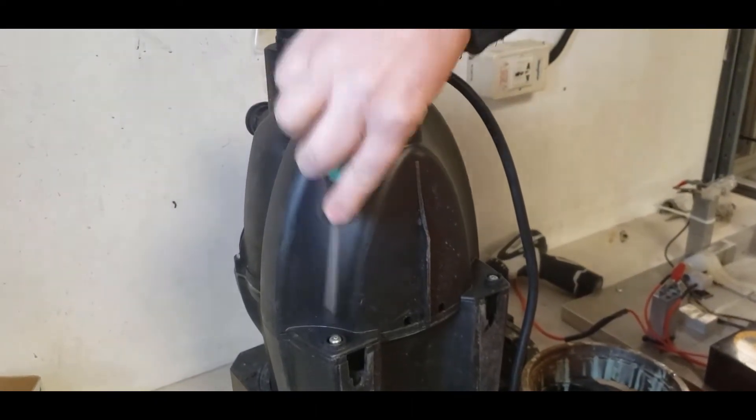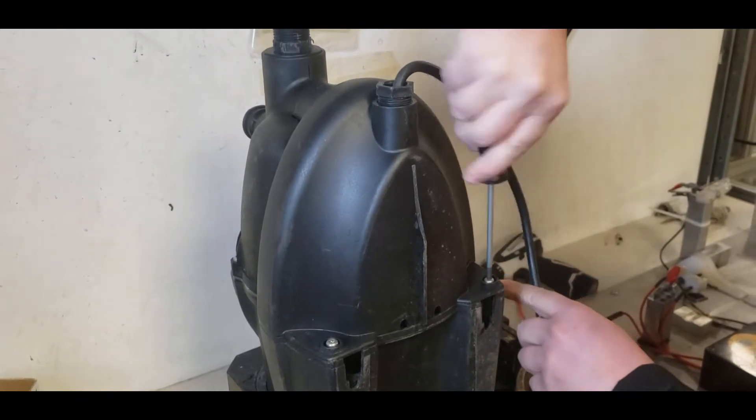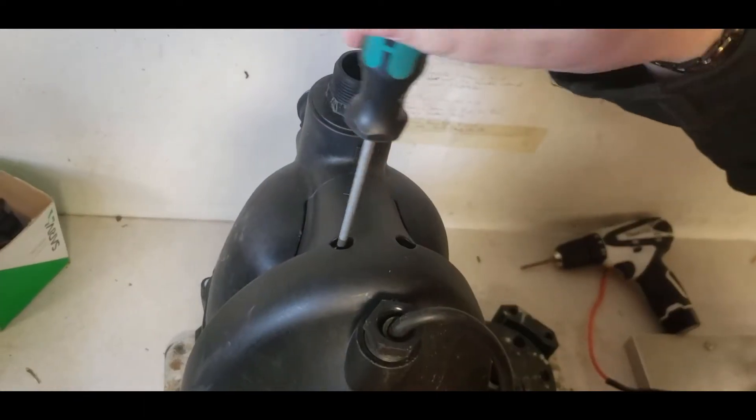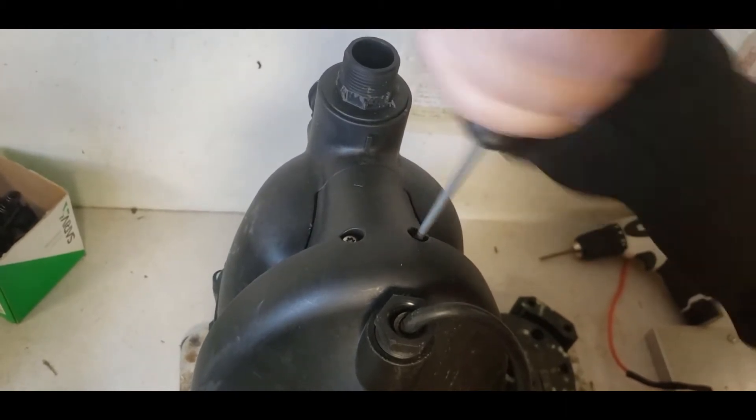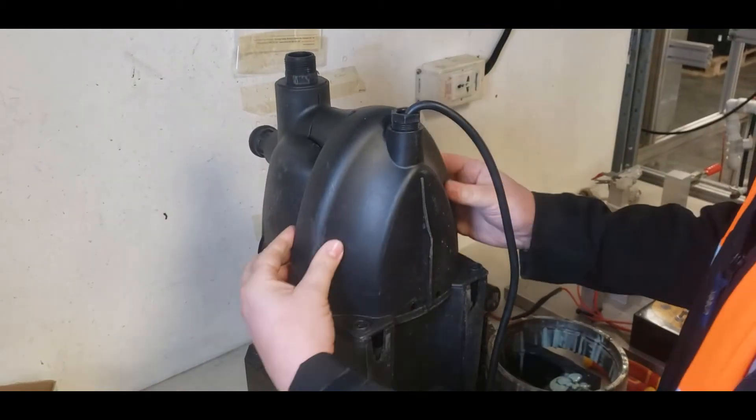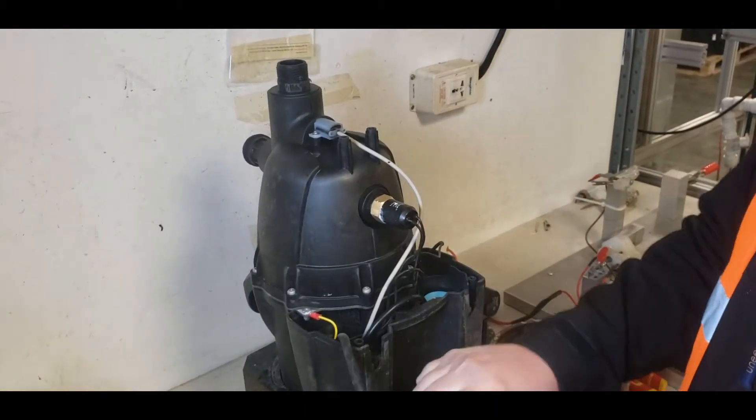Remove the four screws as shown using a Torx screwdriver. There are two near the bottom of the pump and two near the nose of the pump. Remove the cover without putting strain on the mains electric cable.